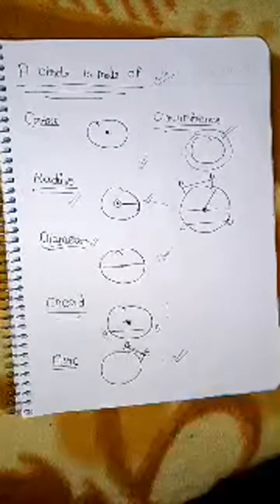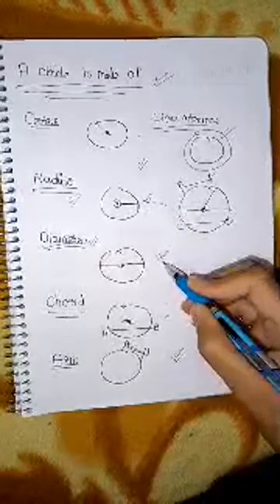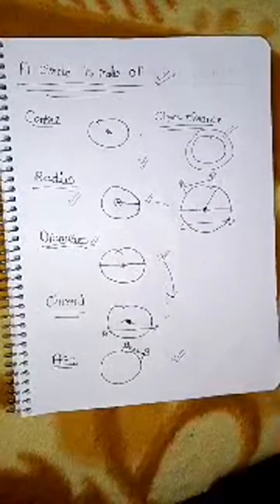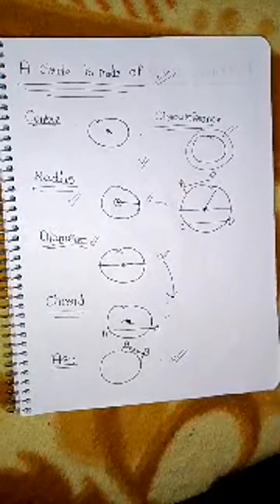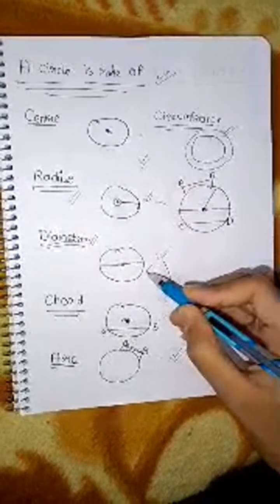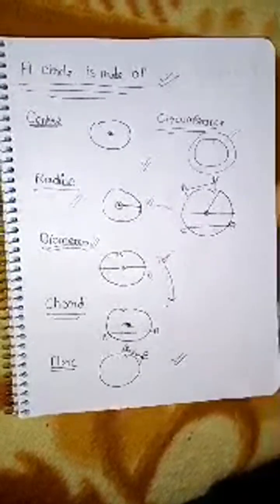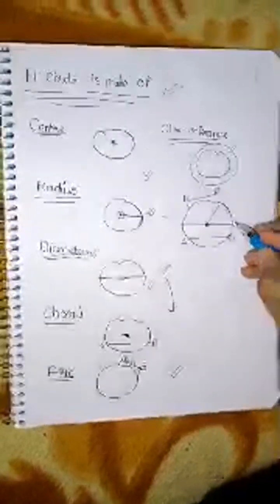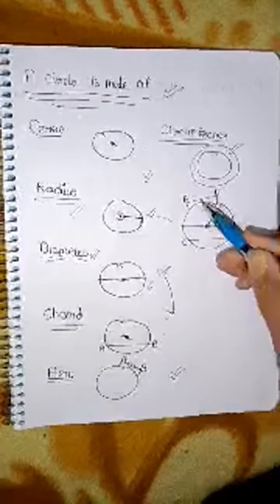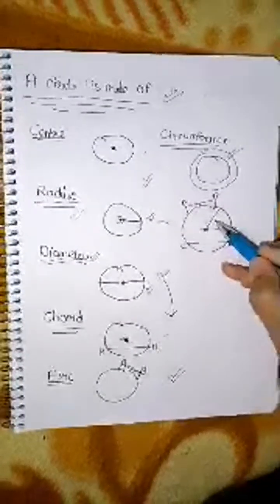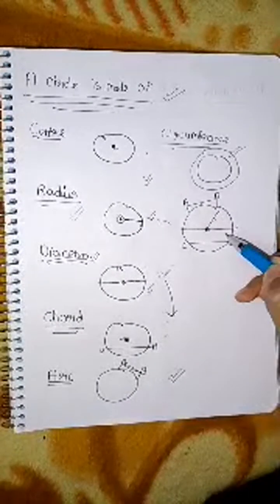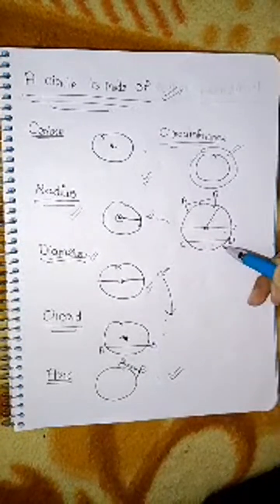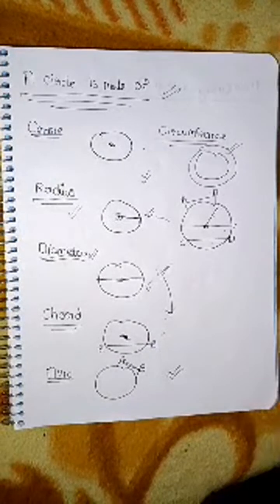Remember that diameter is only a type of chord, but it only joins through the center. Now I will tell you all about those here: arc, radius, diameter, chord, circumference.